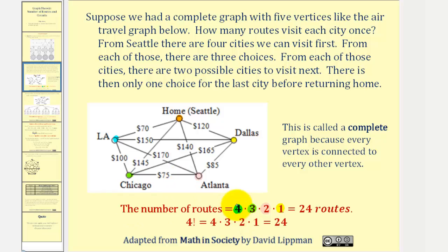So the total number of routes is equal to four times three times two times one, or 24 routes. Another way to express this product is four factorial, which again means four times three times two times one. For example, five factorial would be five times four times three times two times one.